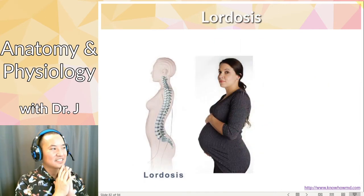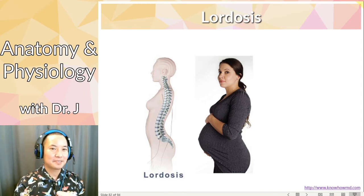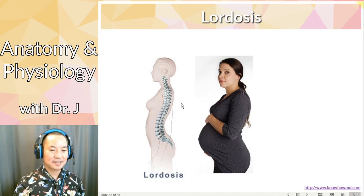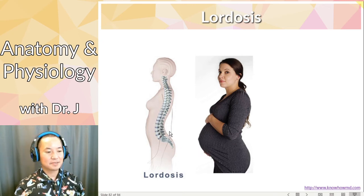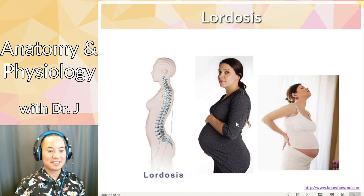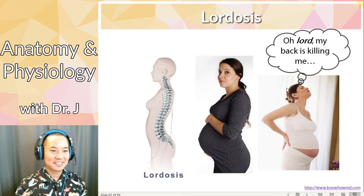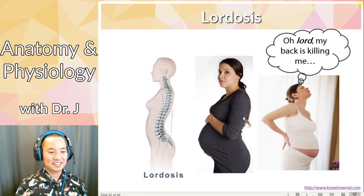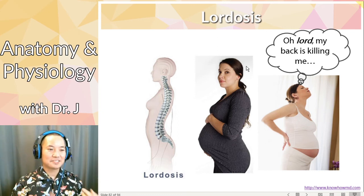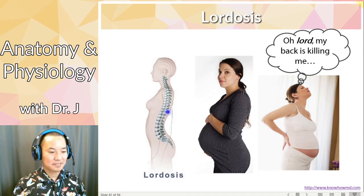Now lordosis. Compared to that hunchback, what you have here is an extreme curvature the other way. I'm thinking of a pregnant woman — she's carrying a baby. If you know someone who is pregnant, they're always complaining about their back. They might say, 'Oh lord, my back is killing me.' So lordosis — a pregnant woman has extreme curvature in the lumbar region protruding out here. Kyphosis, aka hunchback; lordosis is this extreme curvature typically seen in the lumbar region.